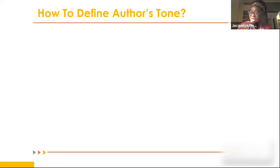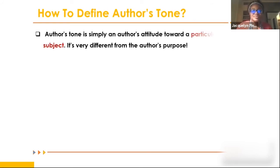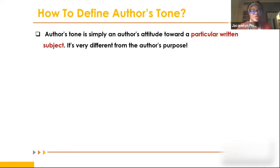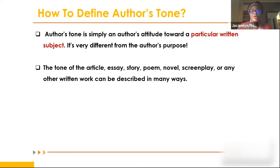Now let's define author's tone. Author's tone is simply an author's attitude toward a particular written subject. It's very different from the author's purpose, which we already reviewed. The tone of an article, essay, story, poem, novel, screenplay, or any other written work can be described in many ways.